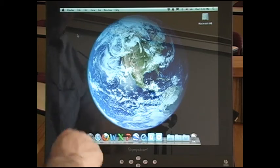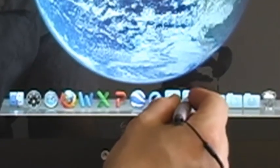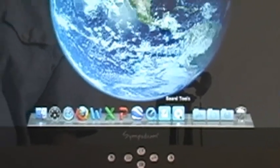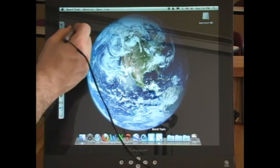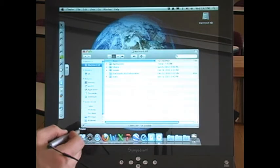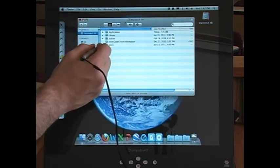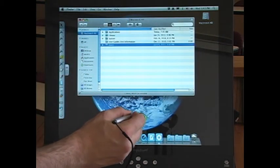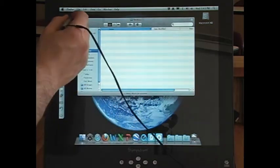To get started you will need to open the board tools software installed on the computer. Once it's activated you can use the stylus similarly to how you use a mouse. You can open new windows, drag files around the screen, and close windows.